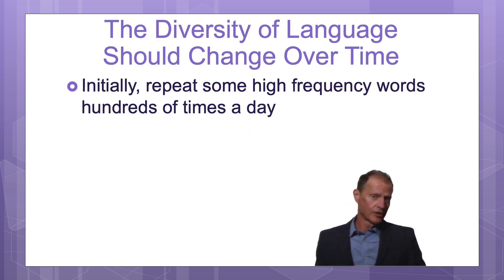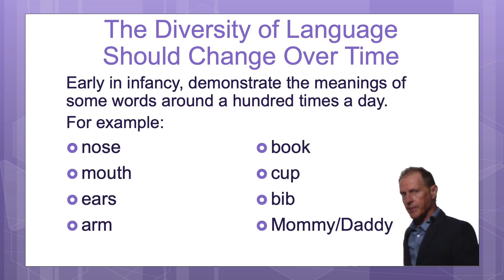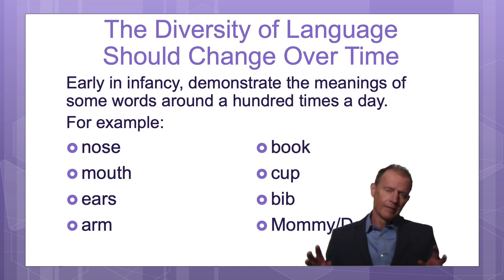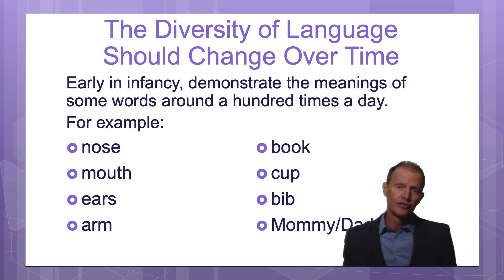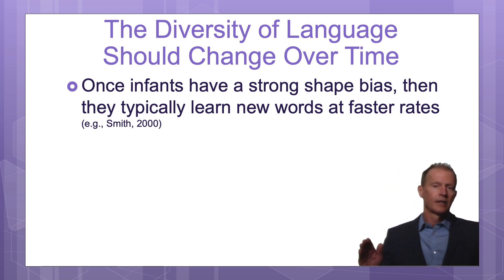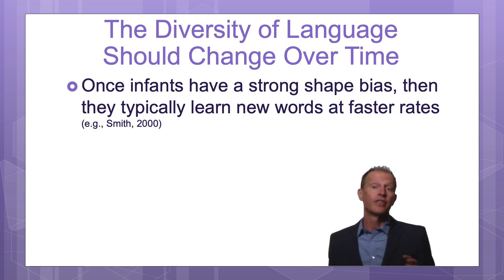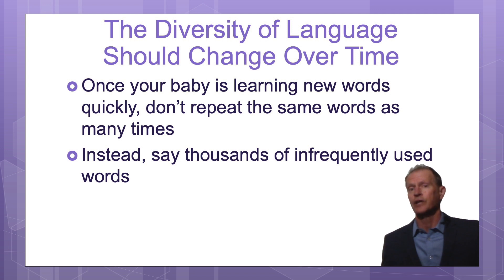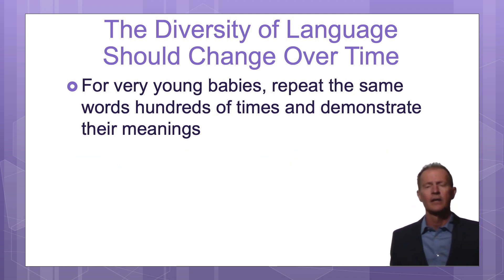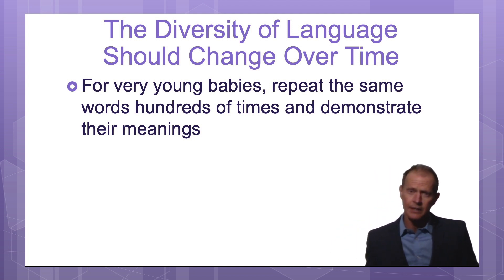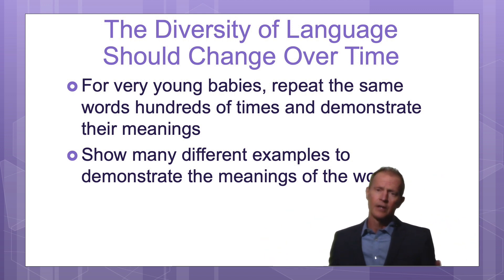The diversity of language should change over time. Initially with young babies, you want to say the same words over and over — I recommend starting with about five objects, some body parts like nose, mouth, and ears, and a few words, repeated hundreds of times every day. But once your child learns the shape bias and understands at least 50 words, they will start learning words very rapidly. That's when you want to increase the number of infrequently used words when speaking or reading with your child. You show many different examples of the same objects — 20 different cups, 20 different chairs — and repeat those same words hundreds of times.